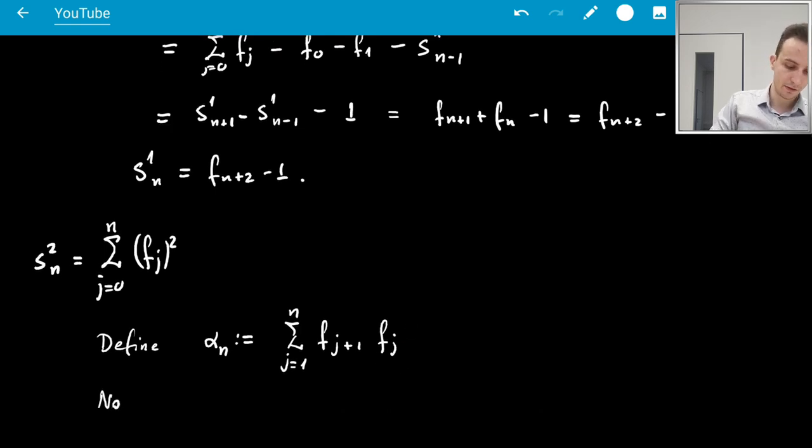And so, notice that alpha_n is, using that this is F_j plus F_j-1, which is star, this is S_2n plus alpha_n-1. Because then this would be equal to sum of j equals 1 to n of F_j squared, which is the same as S_2n because F_0 is 0.